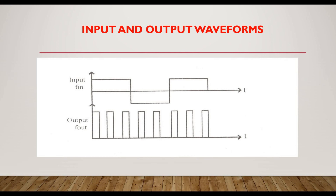Regarding the input and output waveforms: the output frequency is adjustable, and it is possible to vary the output frequency by changing the resistor value. As the input is a low frequency signal, after applying it to the PLL and the divide-by-N network, the frequency is increased. At the phase detector, these two frequencies are compared. This is the complete information about our frequency multiplier.